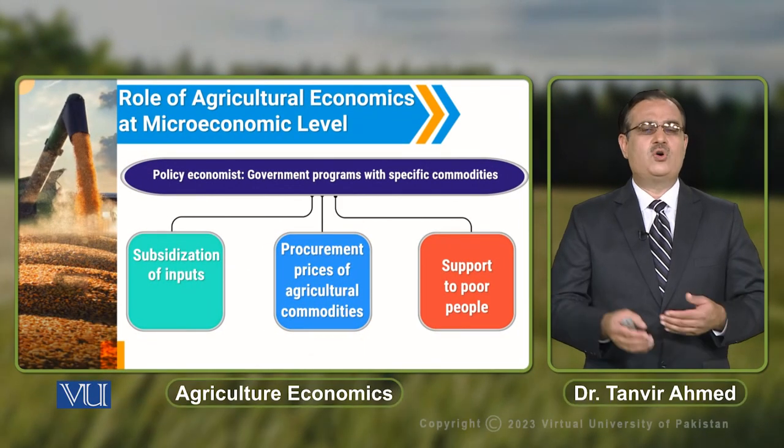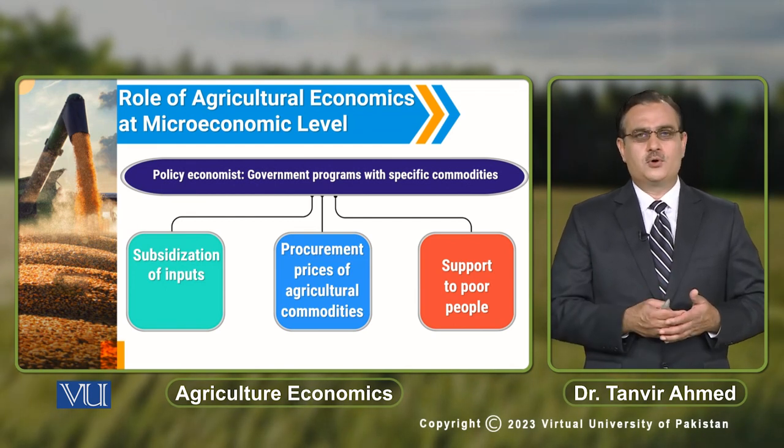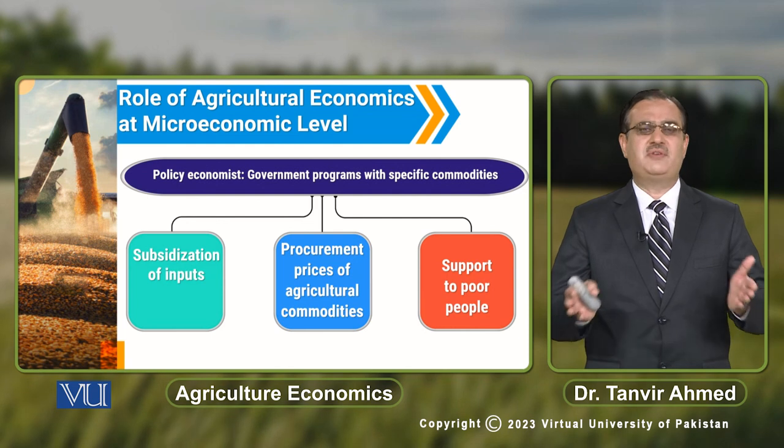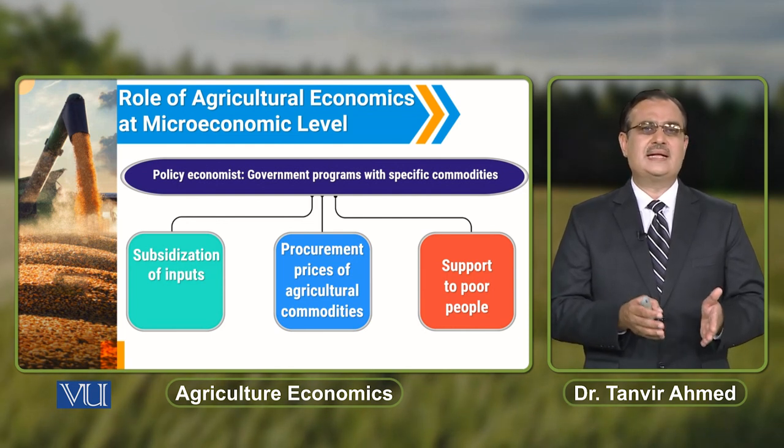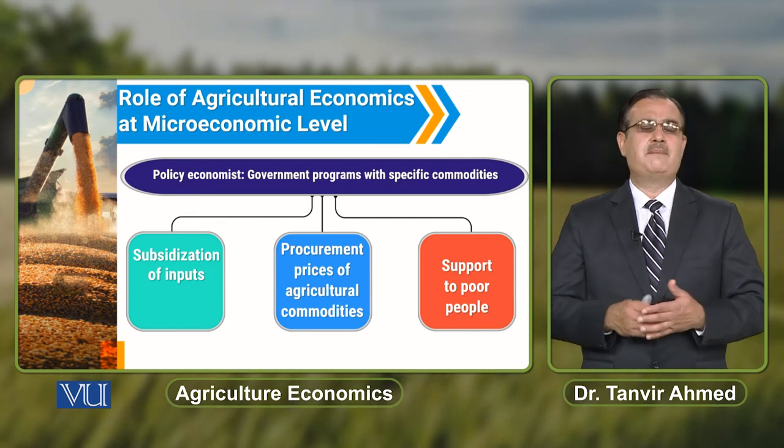When we talk about support for poor people, if the prices of agricultural output are very high in the market, the policy economist will intervene. When you affect decision making at the individual level — for both consumers and producers — this is the role of agricultural economics at the microeconomic level.